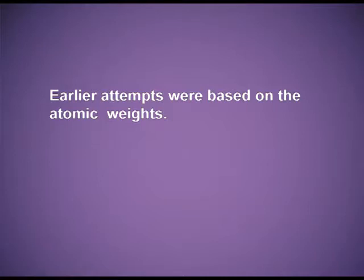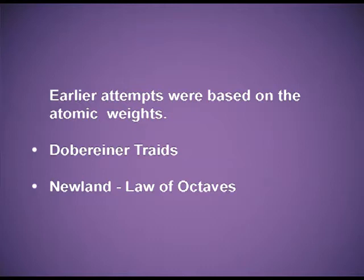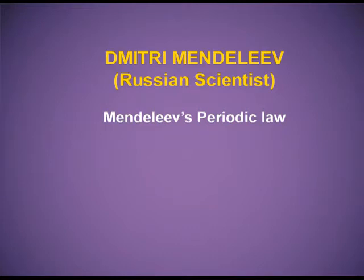Today, we will study about what attempts led to the formation of the periodic table. Earlier attempts were based on atomic weights. Dobereiner said that similar elements exist in groups of three elements, and he called these groups triads. Newlands gave the Law of Octaves. Dmitry Mendeleev, the Russian scientist, his attempt was remarkable — he gave his law known as Mendeleev's Periodic Law.